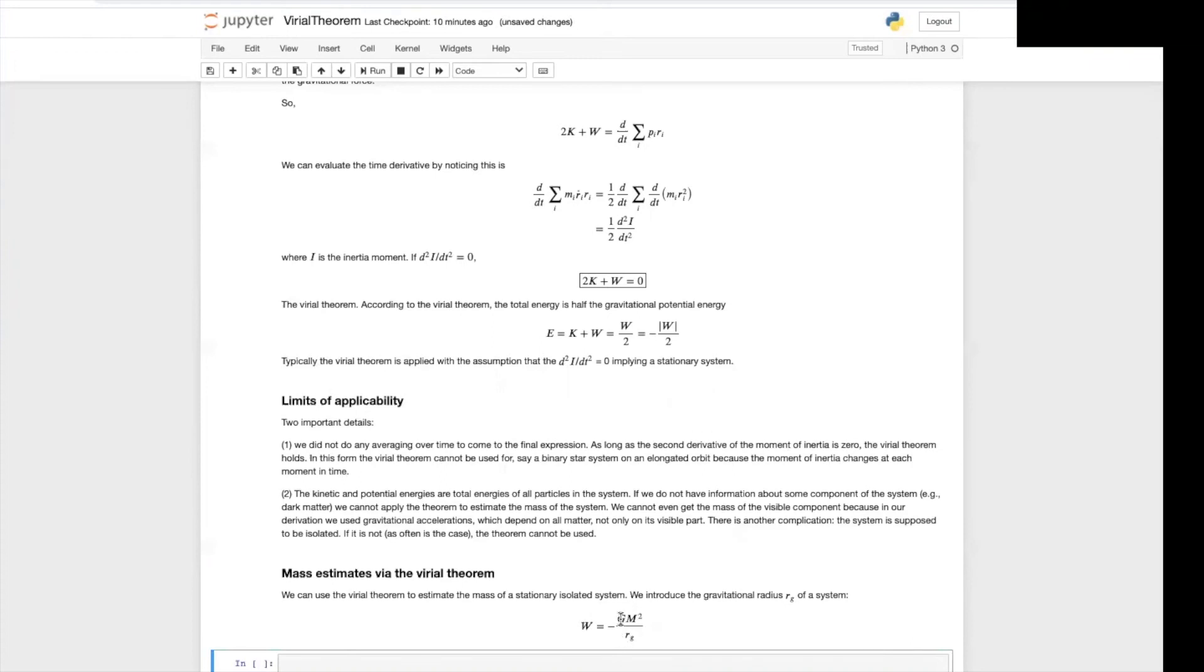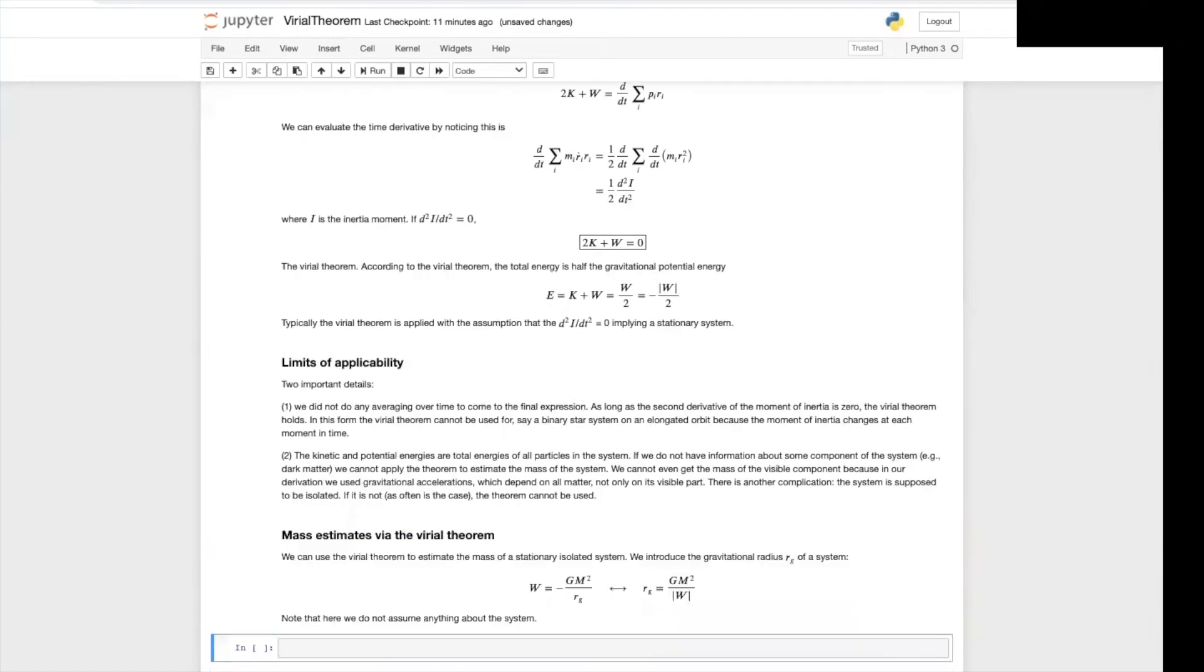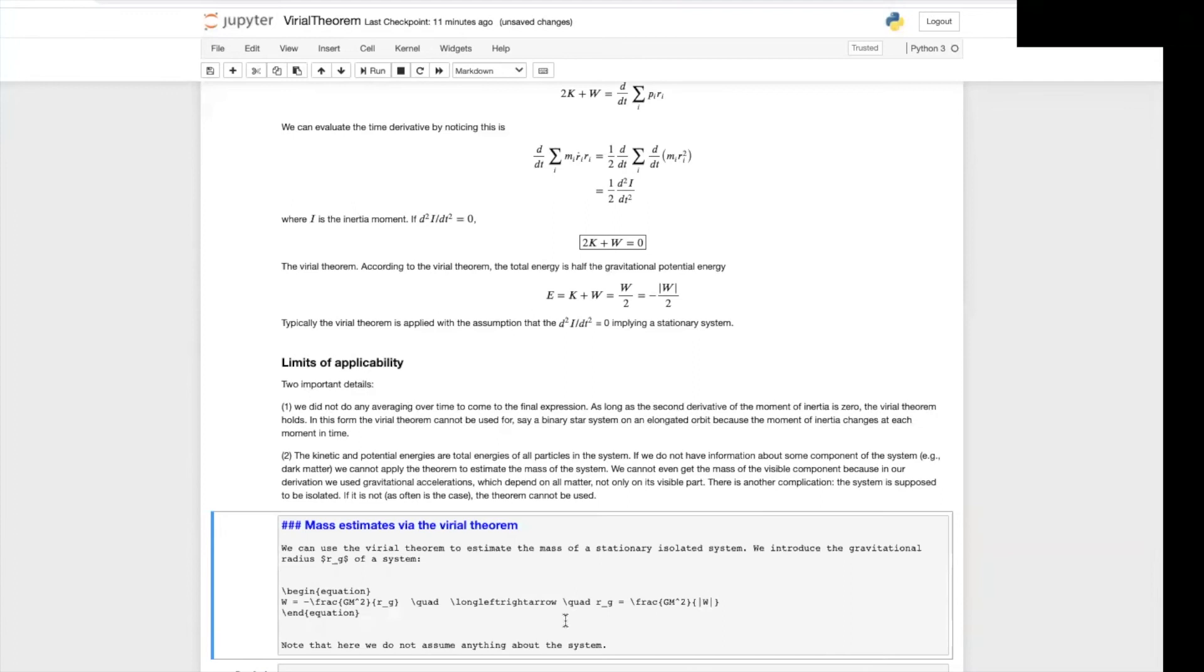So we compute the total gravitational energy and write it in this form here, gm squared over rg, that defines the gravitational radius.